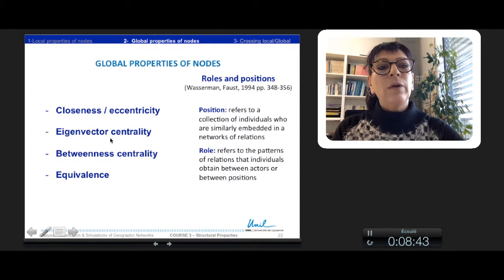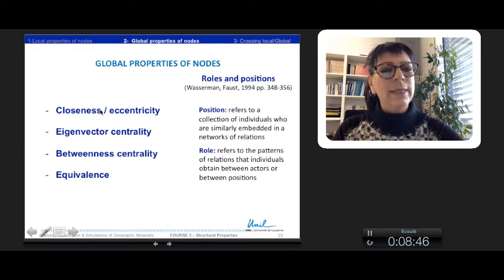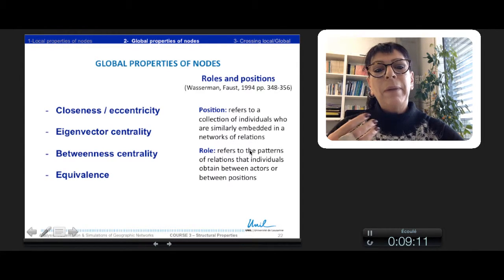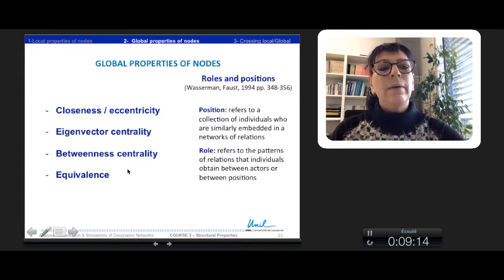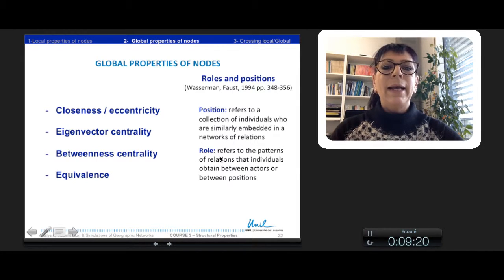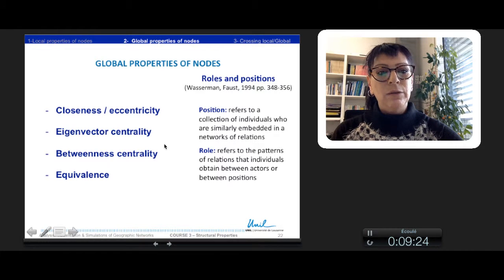So in this part we saw four kinds of global properties of nodes: closeness eccentricity, eigenvector centrality, betweenness centrality, and equivalence. Wasserman and Faust insist on the property of these indexes in order to define the position which refers to the similarity of embeddedness in a network of relations and the role which refers more to the pattern of relations. Equivalence is maybe more adapted to define the role, but position can be also defined by the four kinds of indexes. Thank you.